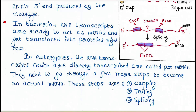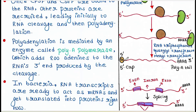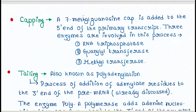There are three steps: capping, tailing, and splicing. Capping involves adding a 7-methylguanosine cap to the 5' end of the primary transcript. Three enzymes are involved in this capping process: RNA triphosphatase, guanylyltransferase, and methyltransferase.